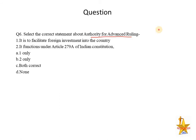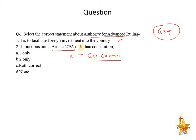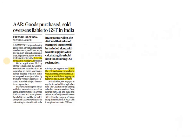The next question — very interesting current affairs related to GST. The first statement says it is to facilitate foreign investment into the country — this is correct. The second statement says it functions under Article 279A of the Indian Constitution. This is wrong, because Article 279A deals with the GST Council, and this body — the Authority for Advance Ruling (AAR) — is linked to the GST Council but is not directly under it. Therefore only statement one is correct.